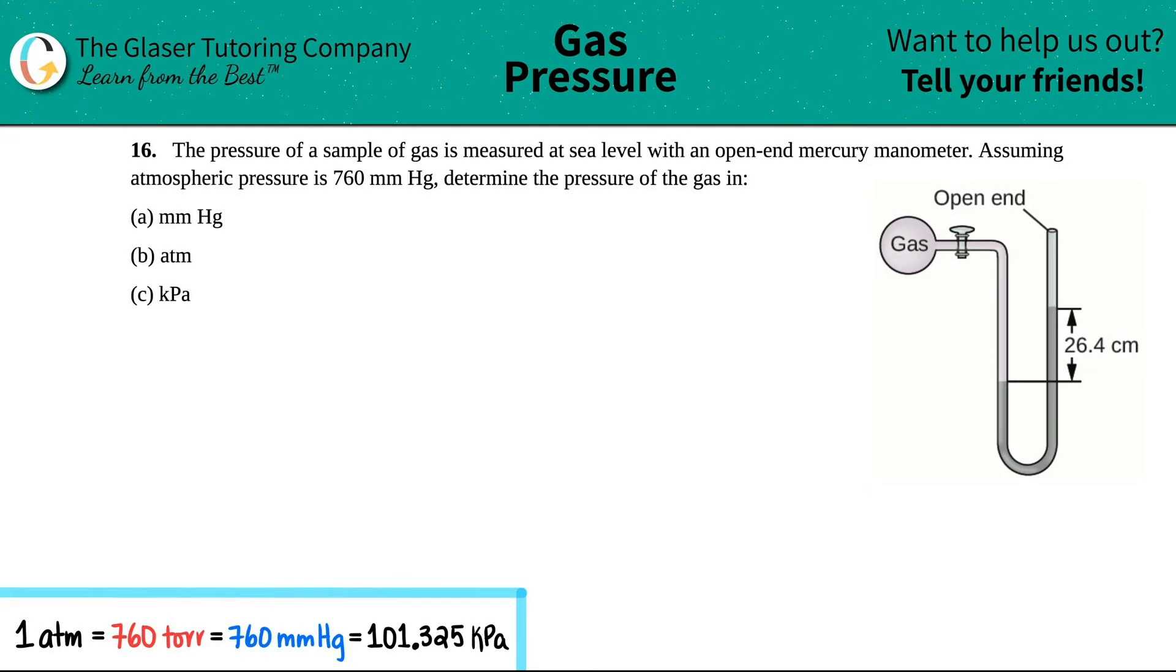Number 16, the pressure of a sample of gas is measured at sea level with an open-ended mercury manometer. Assuming the atmospheric pressure is 760 millimeters of mercury, determine the pressure of the gas in millimeters of mercury, ATM, and kilopascals. And then they give us this lovely drawing here.